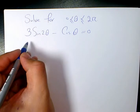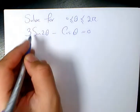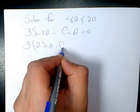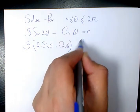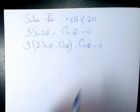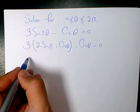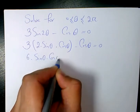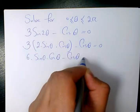So the first thing I'm going to do, based on the double angle, we know sine 2 theta is 2 times sine theta times cosine theta. So we have 3 times 2 sine theta cosine theta minus cosine theta equals 0. 3 times 2 is 6, so 6 times sine theta times cosine theta minus cosine theta equals 0.